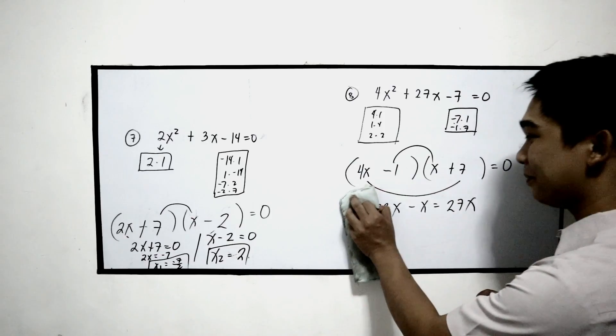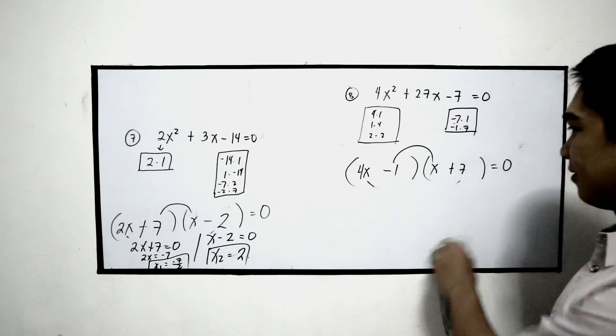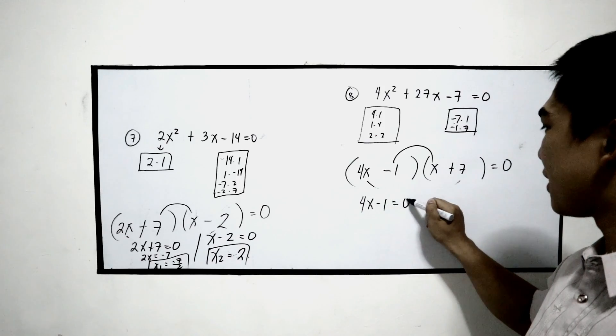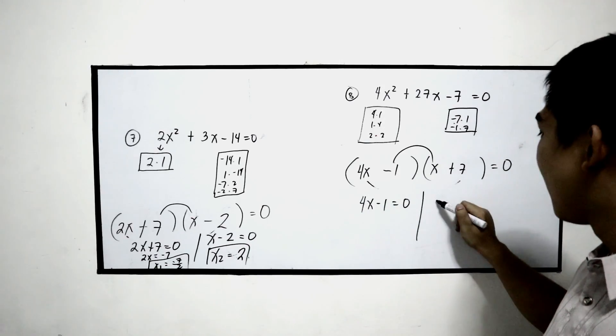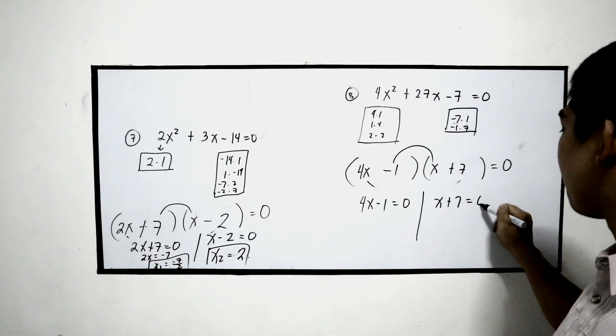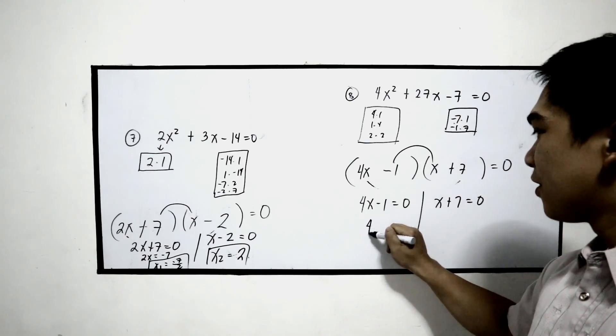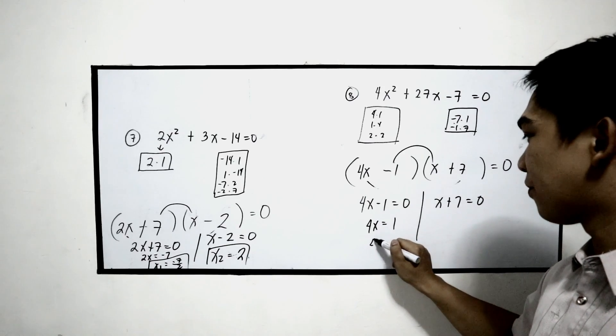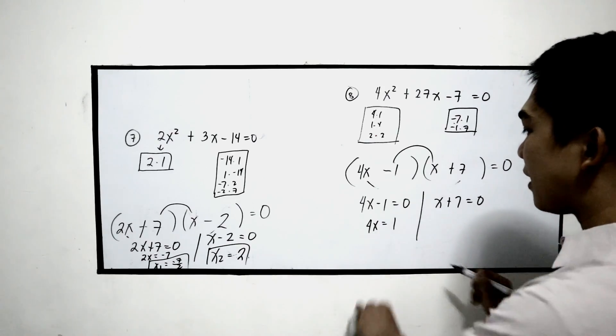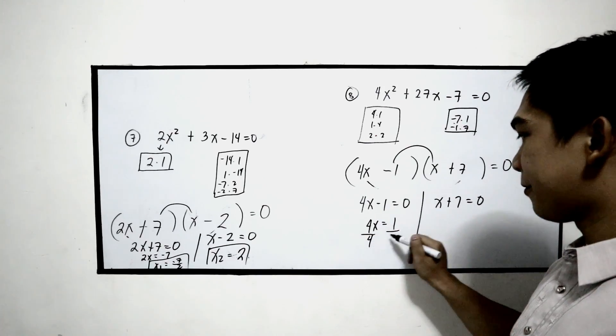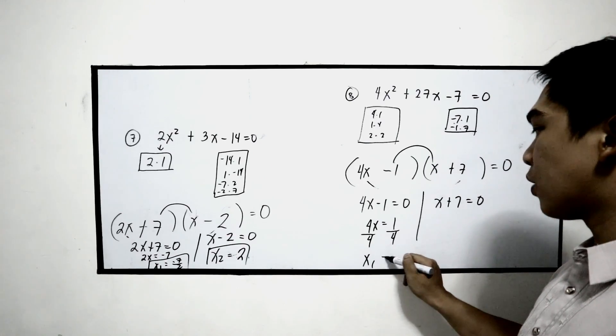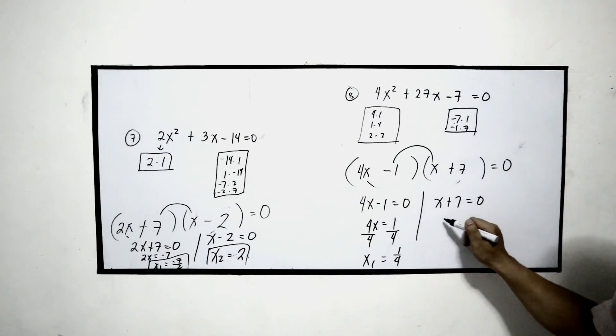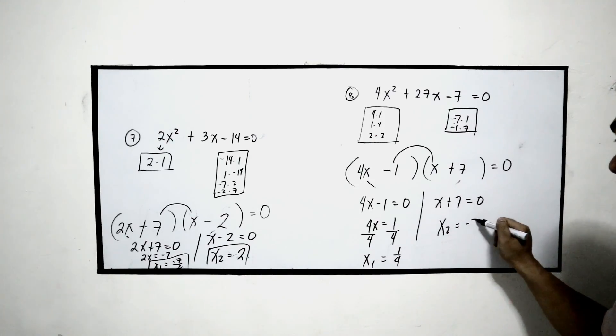Now, equate to 0. So 4x minus 1 is equal to 0, and x plus 7 is equal to 0. 4x is equal to, transposed, that is 1. Now, divide by 4, x sub 1 is 1 over 4. The other one, x sub 2 is equal to negative 7.